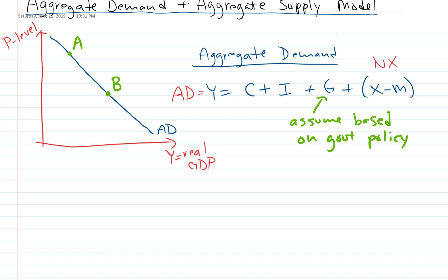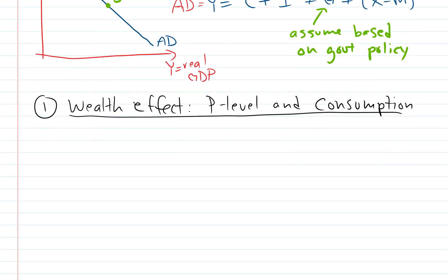For now we're going to assume this is based on government policy so the government determines G. We're going to look at the other parts and see how they will increase when the price level is lower. Some of you might be thinking it's obvious it's going to increase when the price level is lower, but it actually isn't obvious. Let's make sure we go through this carefully. We're not talking about the price of an individual good, we're talking about the overall price level in the whole economy. Let's start with the first reason, the wealth effect. This is the relationship between the price level and consumption.